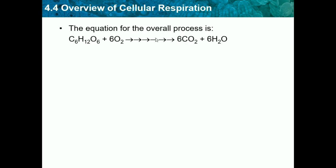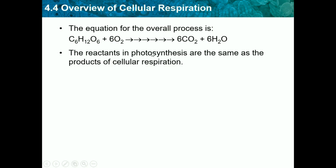The equation for the overall process is: C6H12O6 + 6O2 → 6CO2 + 6H2O. So glucose plus oxygen yields carbon dioxide and water. The reactants in photosynthesis are the same as the products of cellular respiration, so cellular respiration and photosynthesis are the same equation, just flipped.